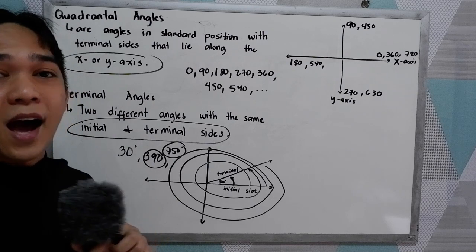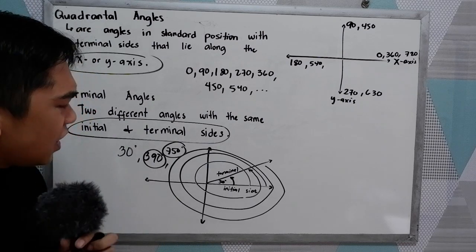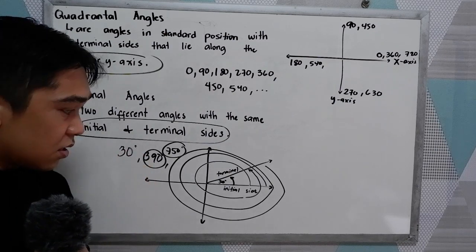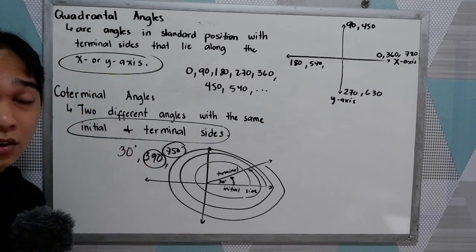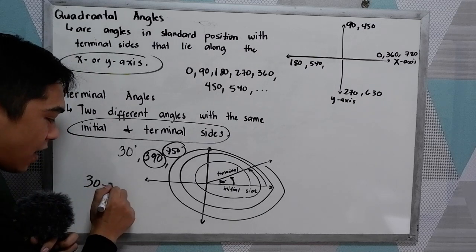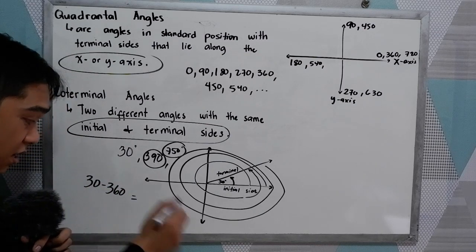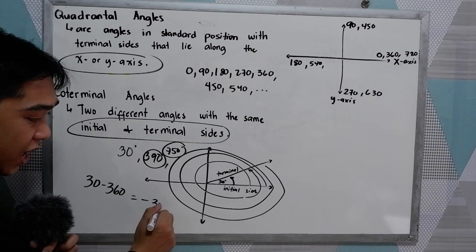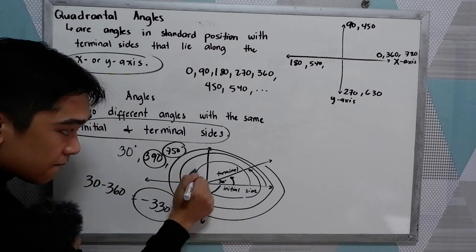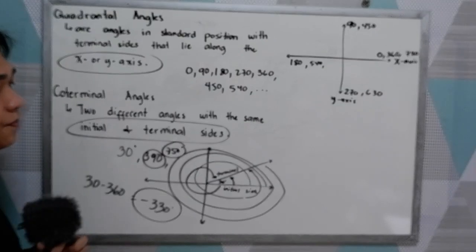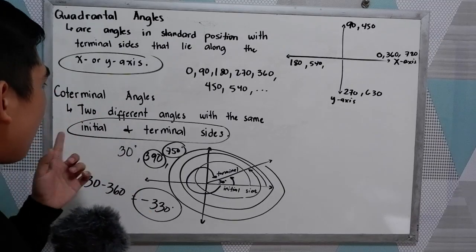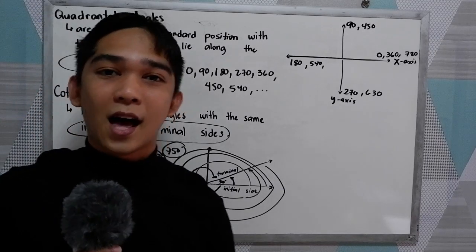And if you want to get the negative coterminal of 30 degrees, just subtract 360. So 30 minus 360 equals negative 330 degrees. If we plot negative 330, it lands here — that's the coterminal angle.